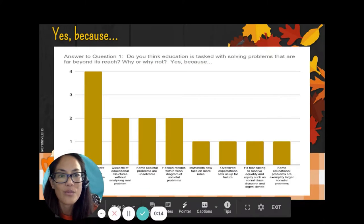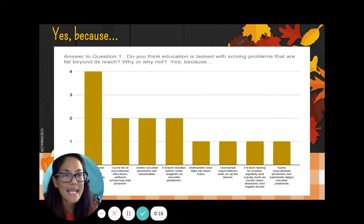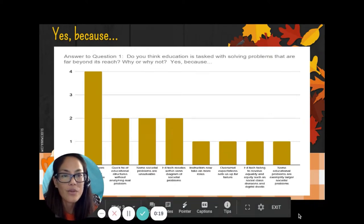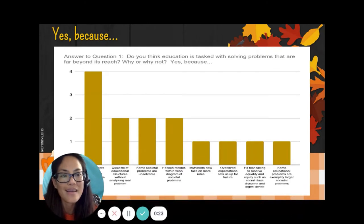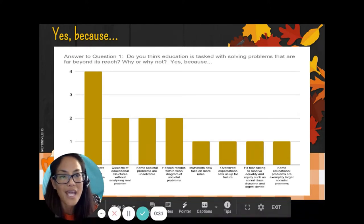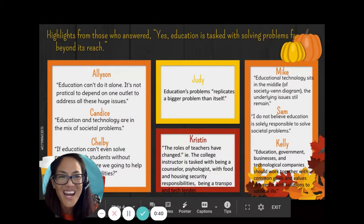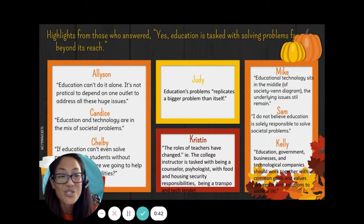I took the information from those who are both or undecided and disaggregated them among the yes and no data. From those themes of yes, those with the most reoccurring data included that it requires more than the educational system to solve societal problems. Society is looking for a quick fix, turning to educational structures without fully analyzing the problem. Some societal problems are unsolvable, and educational technology resides within the Venn diagram of societal problems. Here are highlights from Allison, Candice, Shelby, Judy, Kristen, Mike, Sam, and Kelly, who answered yes.